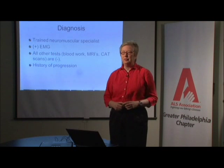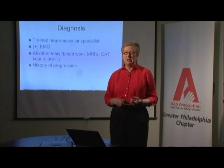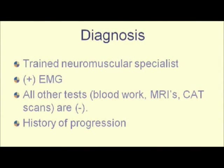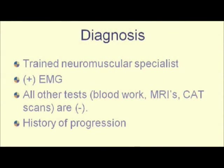Diagnosis often takes a long time. One, there has to be a history of progression — the person has to, over a period of time, get weaker and weaker. Two, a trained neuromuscular specialist, which is a neurologist who specializes in these types of disorders, can pick out certain signs on exam. They do a whole slew of blood work, CAT scans, MRIs — everything has to come out negative. And they have to have a positive EMG, which is the test where they stick needles in the muscles. From there, they can tell if part of the motor neuron system is affected.